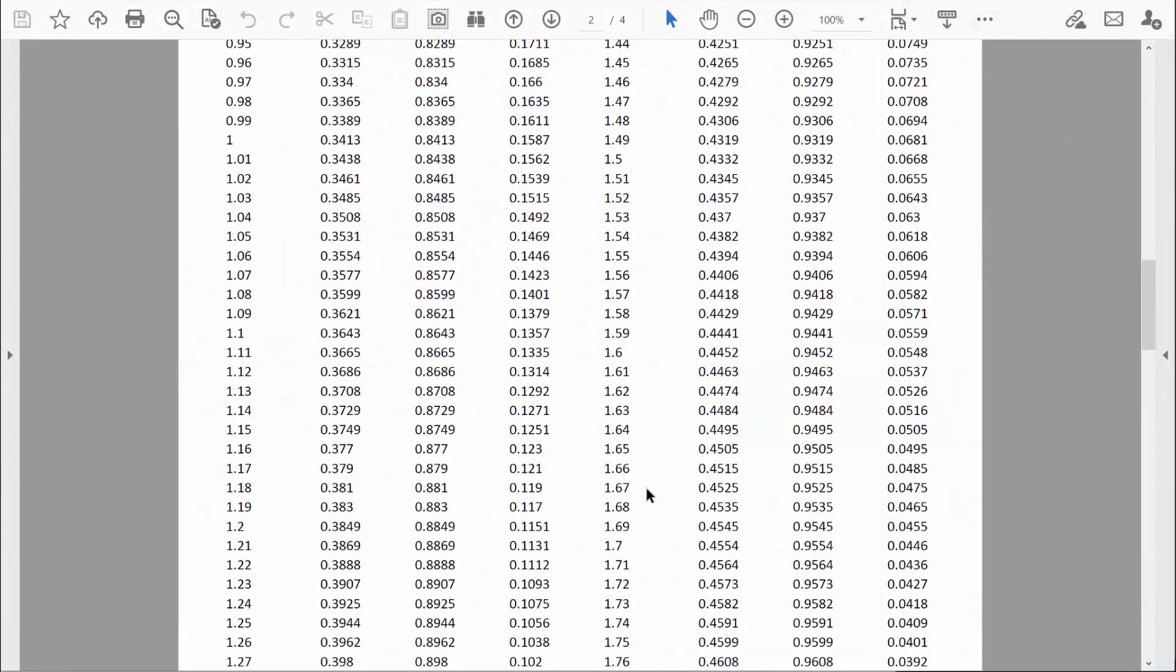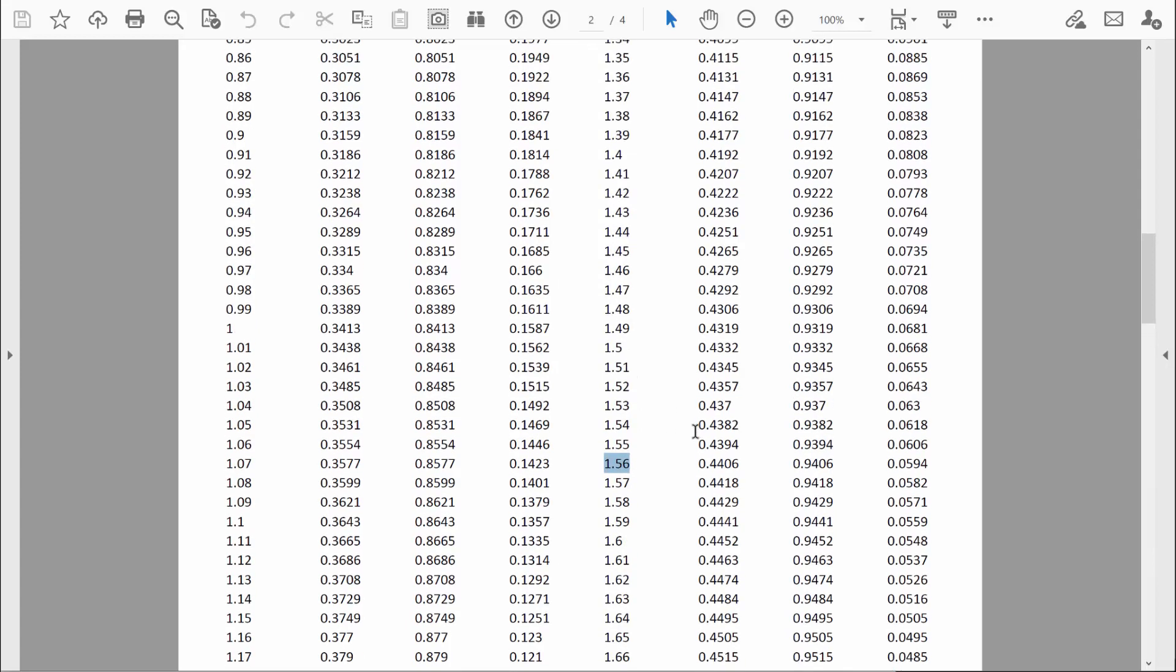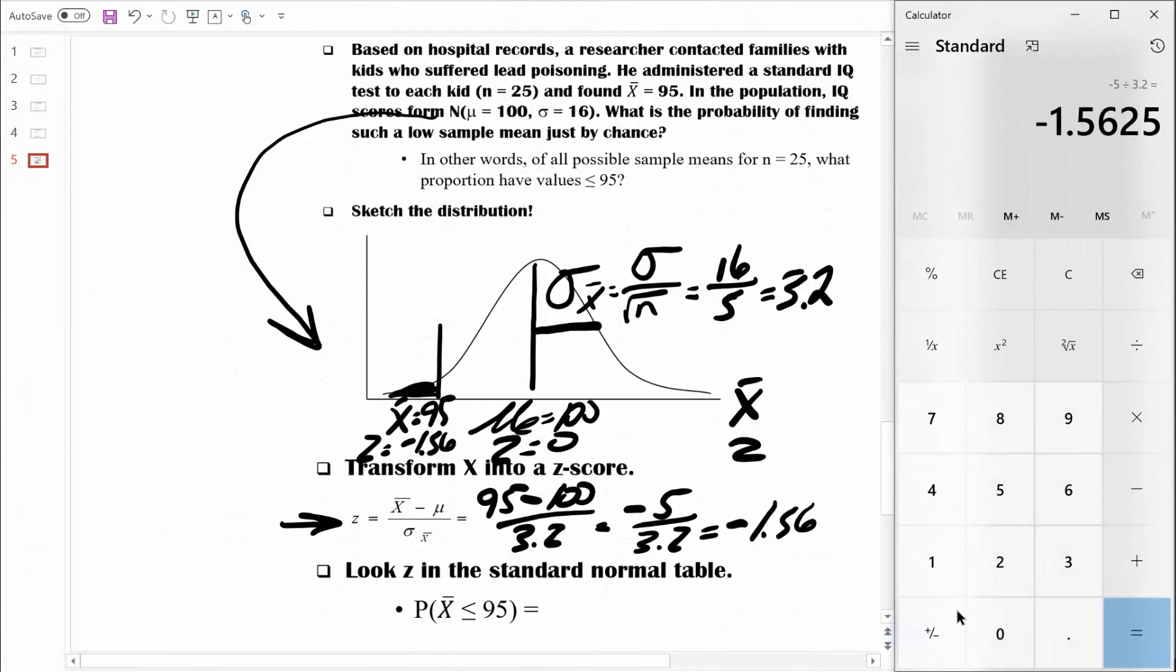Here's our Z table. We're looking for 1.56. Here it is right here. If I scroll down just a little bit, you can see the column headings. And all the way off to the right hand side, we see the proportion of area in the smaller region, which is the tail. 0.0594.